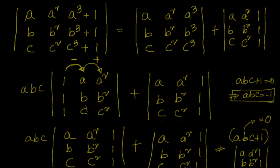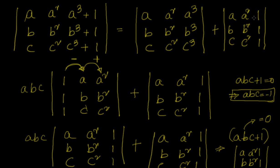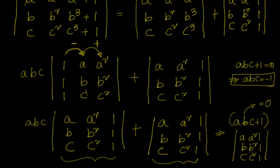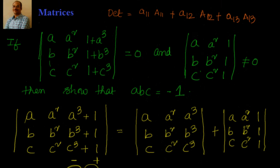By that property we obtained the matrix given whose determinant is not equal to zero. But when taking ABC common, the column positions shift. The second property: switching a row or column multiplies the determinant by negative 1. Two flips cancel out, keeping it positive. So ABC + 1 times the determinant equals zero, and since that determinant is not zero, ABC + 1 = 0, giving ABC = minus 1.